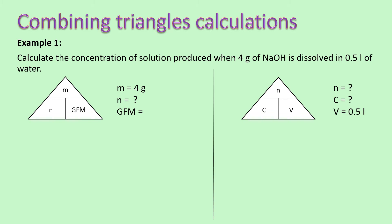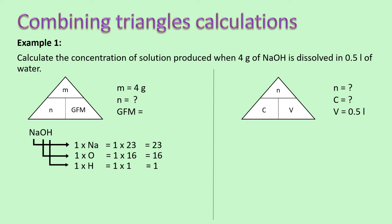Step two is to work out the GFM — remember, you can always do this if you have the formula or the name. In this case we have the formula NaOH, so we go through our steps: we've got one sodium, one oxygen, and one hydrogen. If we add the mass of all of them together, we get our gram formula mass — our GFM is 40 grams. Now that we've worked that out, we can add it to our known values.